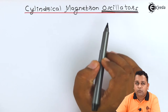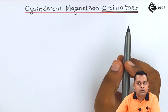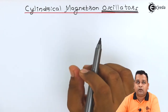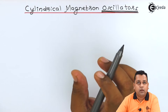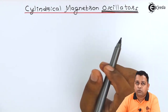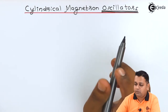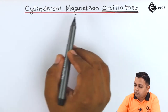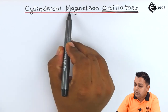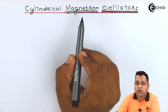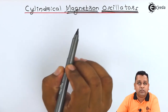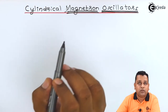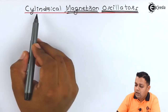If RF input is provided and it is getting amplified to a higher magnitude, then it is working as an amplifier. The magnetron has a cross orientation of the DC electric field and the DC magnetic field.